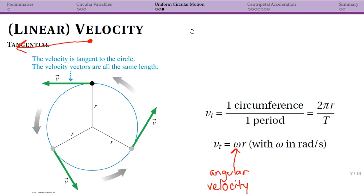The definition: in one period, the time for one revolution, you've gone one circumference. If this is θ_i and the rock marches along the circle, how far has it traveled? It's traveled 2πr, the circumference. How long did it take? The period. So tangential velocity v_t = 2πr/T for uniform circular motion.